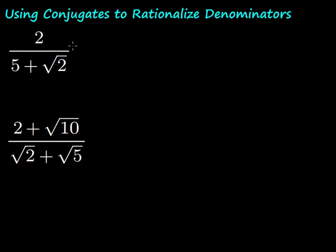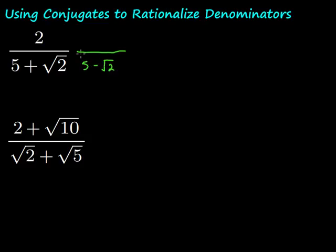So first of all, what are conjugates? Conjugates are just these two things with the opposite signs in between them. So in this case, they're both plus, so our conjugate is going to be 5 minus the square root of 2. If this was 5 minus the square root of 2, the conjugate would be 5 plus the square root of 2. We're going to multiply both the top and the bottom of our fraction by the conjugate, which is 5 minus the square root of 2. Notice those are opposite signs.